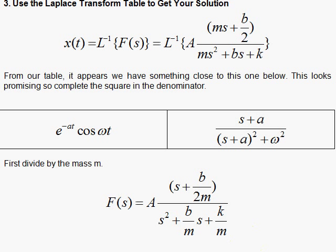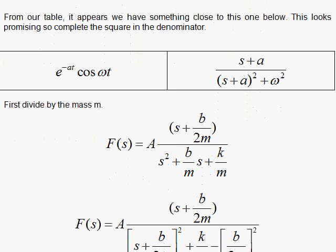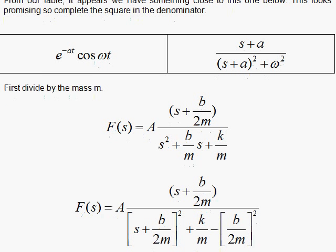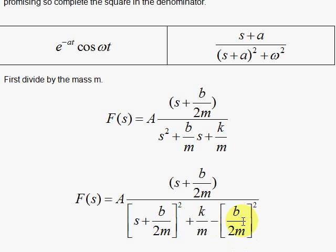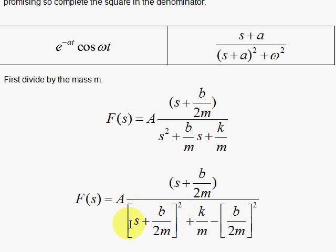If I add and subtract something — because I can't change the equation — I'm going to add (b over 2m) squared here. If I do that and also subtract it, then over in here I'd have a completed square. In other words, if I square (s + b over 2m), I get s squared plus sb over m, and then b squared over 4m squared, but I'm going to subtract that so I don't change the equation. By adding and subtracting it, I then have my completed square.